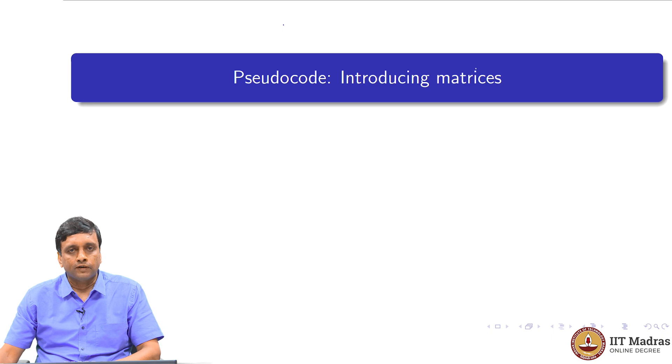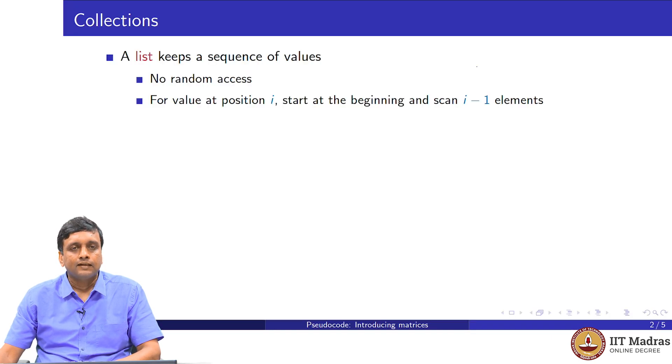We have seen two kinds of collections so far: lists and dictionaries. A list keeps a sequence of values. It is very useful for accumulating things as we go along. But one of the disadvantages of using a list is that it does not support random access. We cannot look at an arbitrary element in the list without walking to it from the beginning. If you want a value at position i, you have no option except to start at the zeroth position and walk right until you hit the ith position.